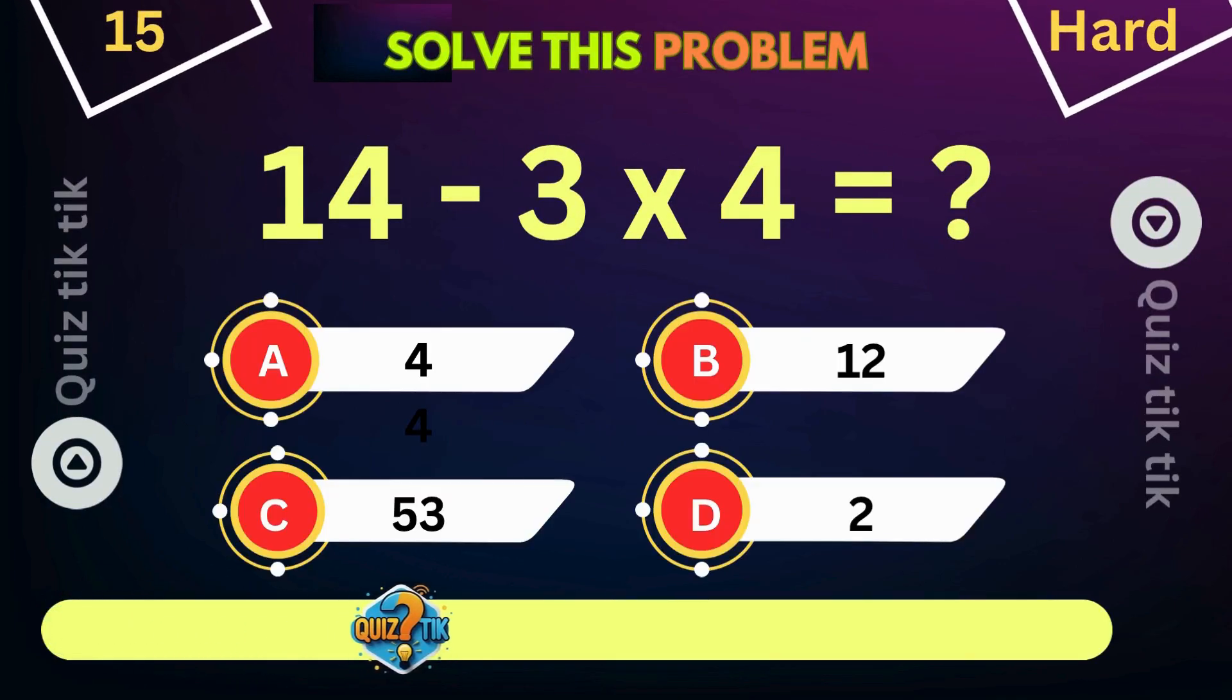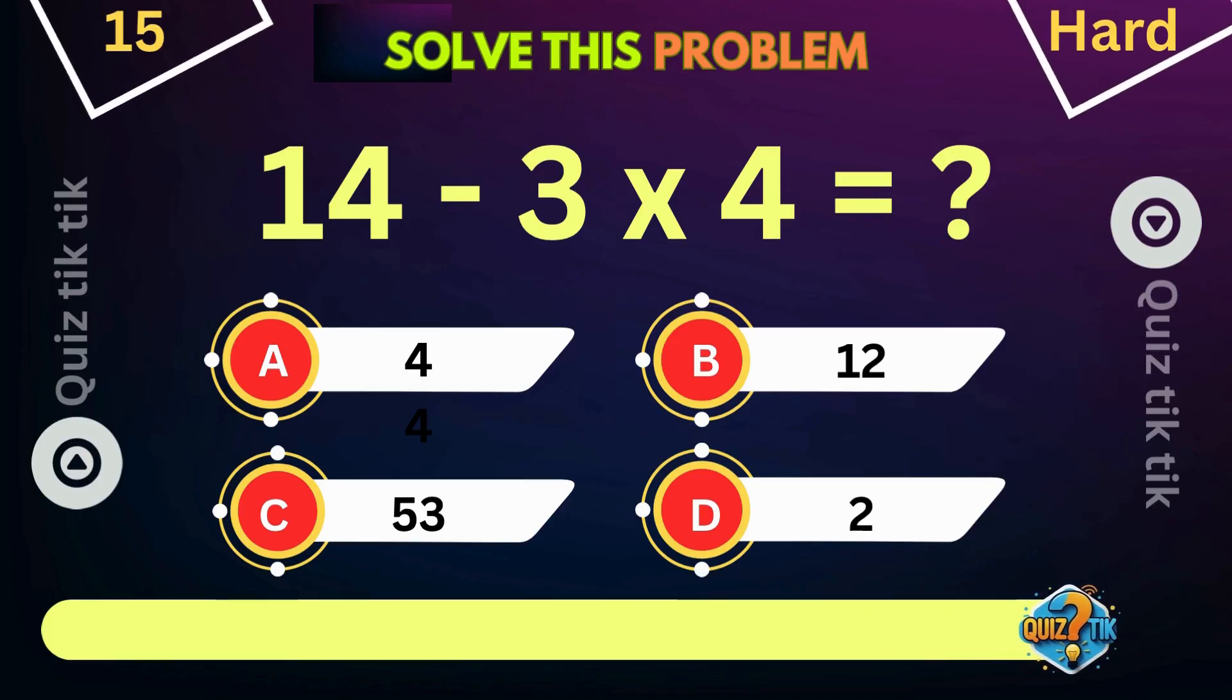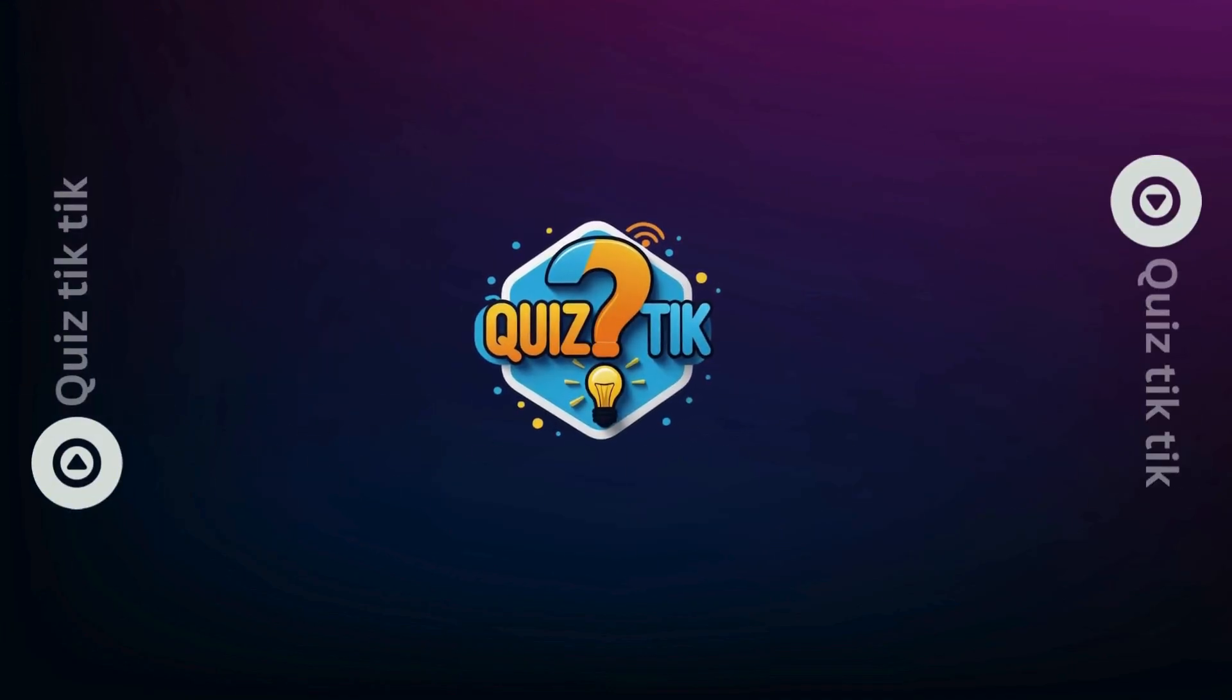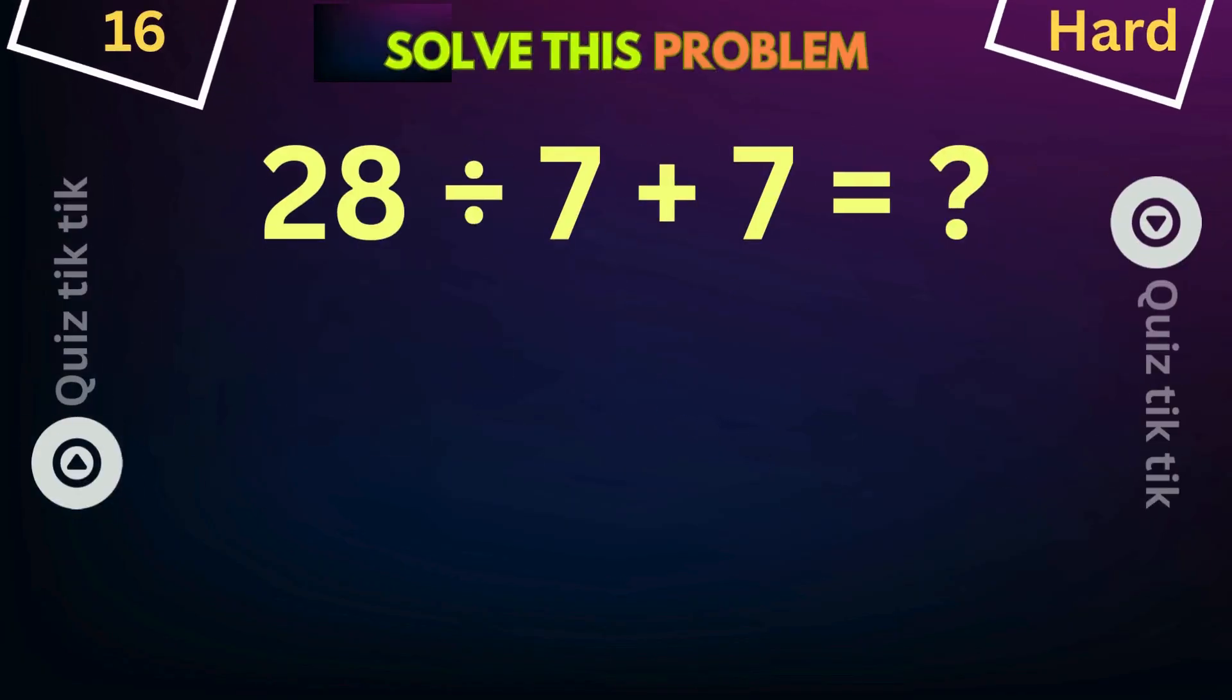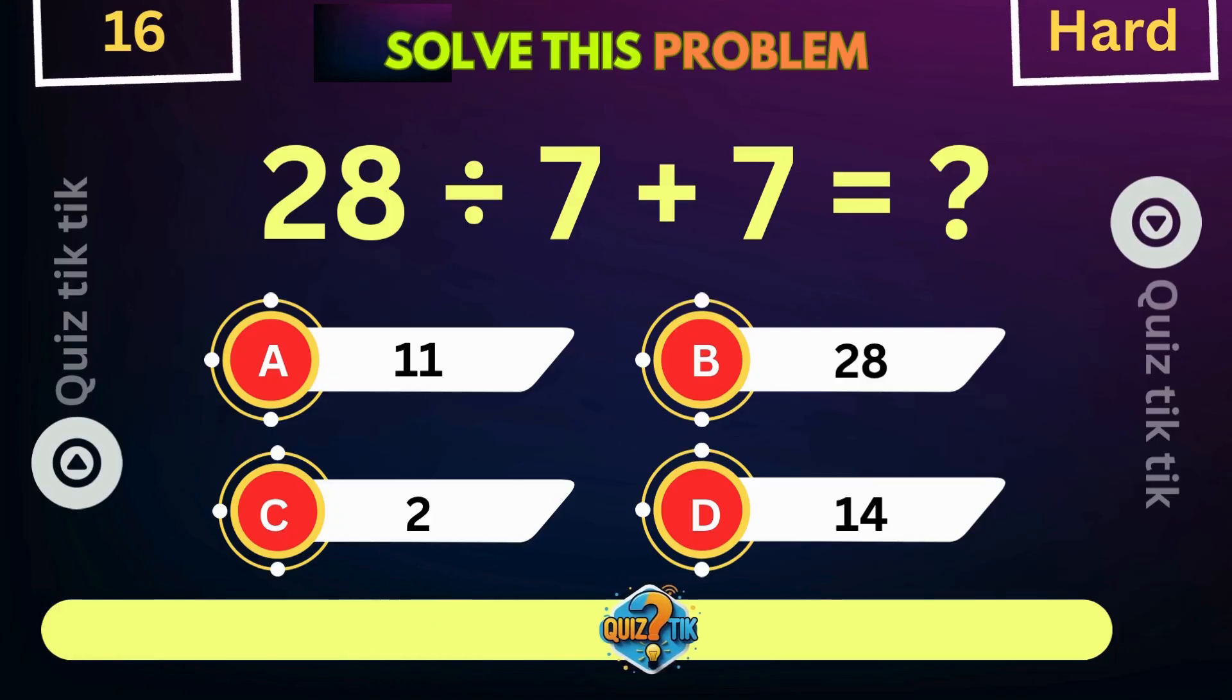14 minus 3 times 4 is equal to. 28 minus 8 divided by 7 plus 7 is equal to.